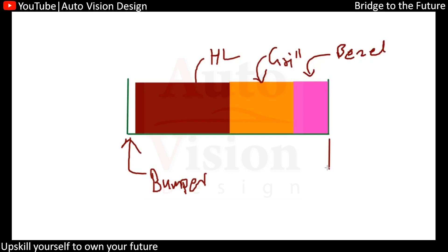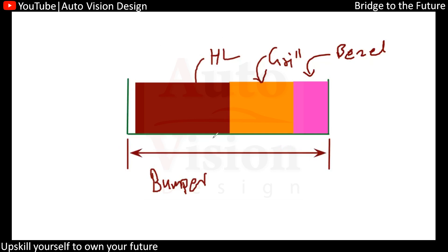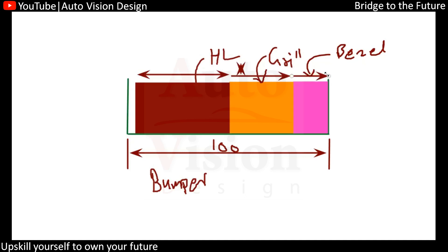Now you can check — the bumper has its own dimensions. You can find this will be the bumper overall dimension, whatever it will be: 100 mm, 150 mm. Then again the headlamp also has its own dimension — from this to this, as well as from here to here, and then again from here to here. So this dimension also has some tolerance value.